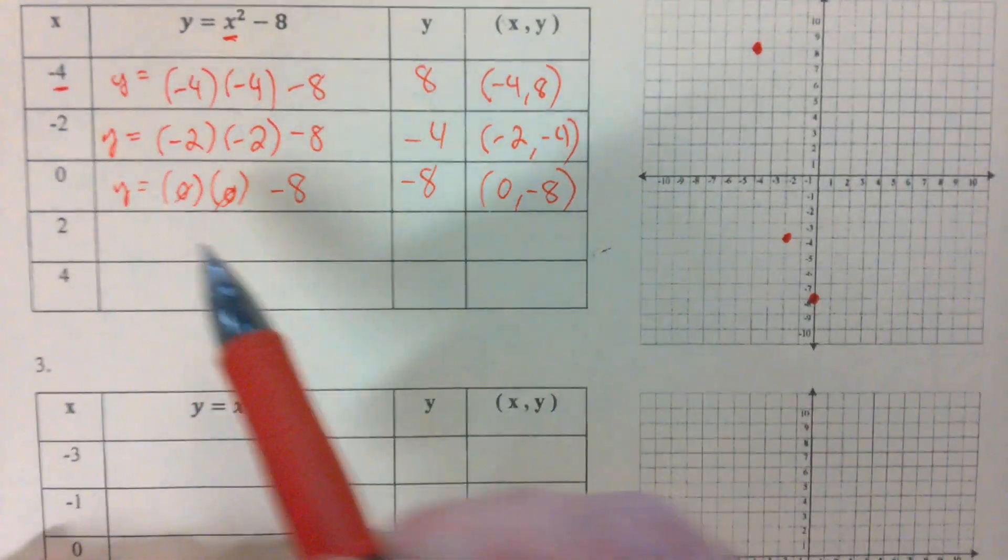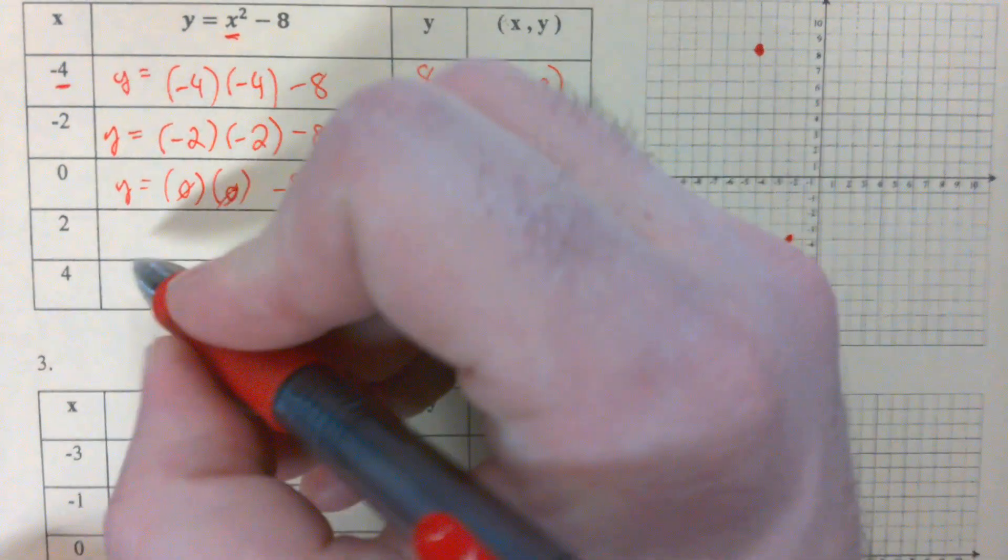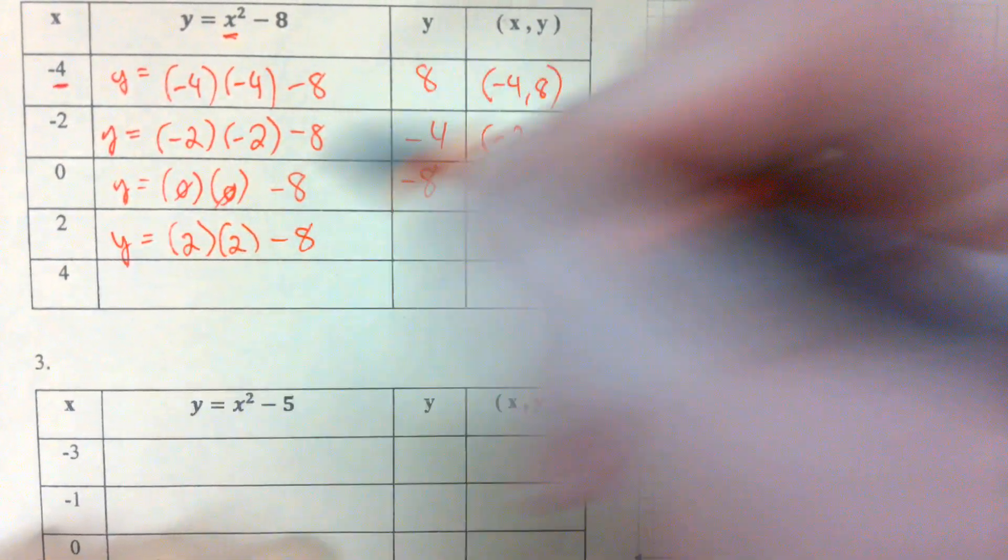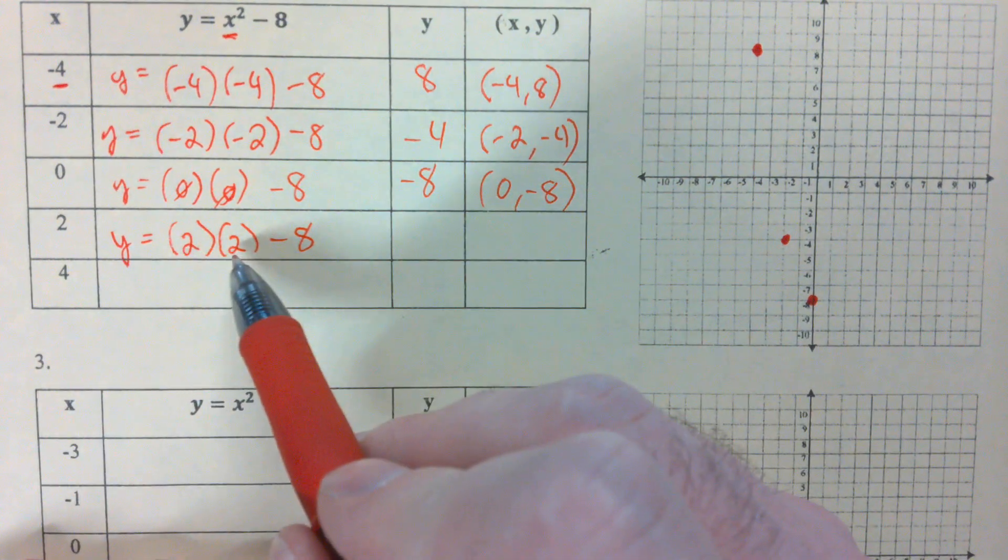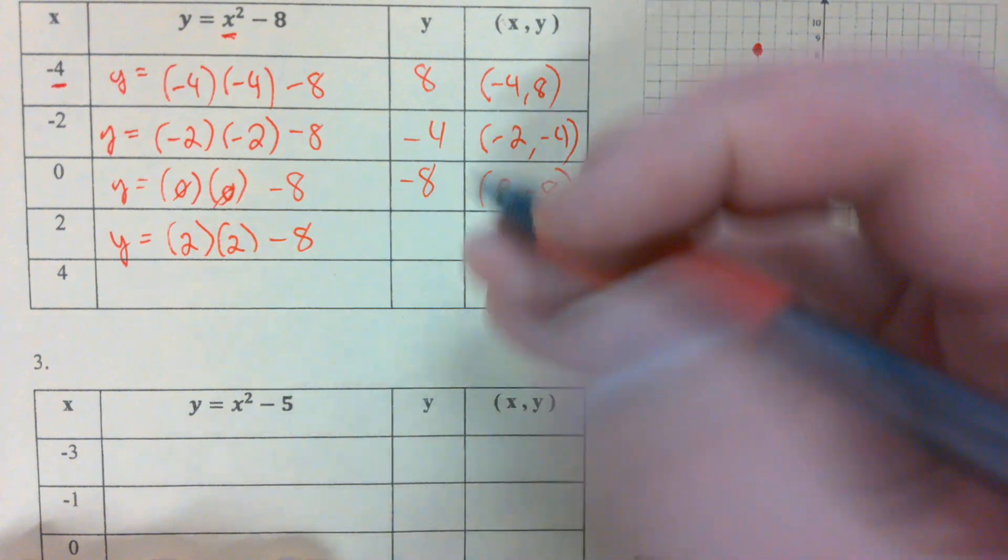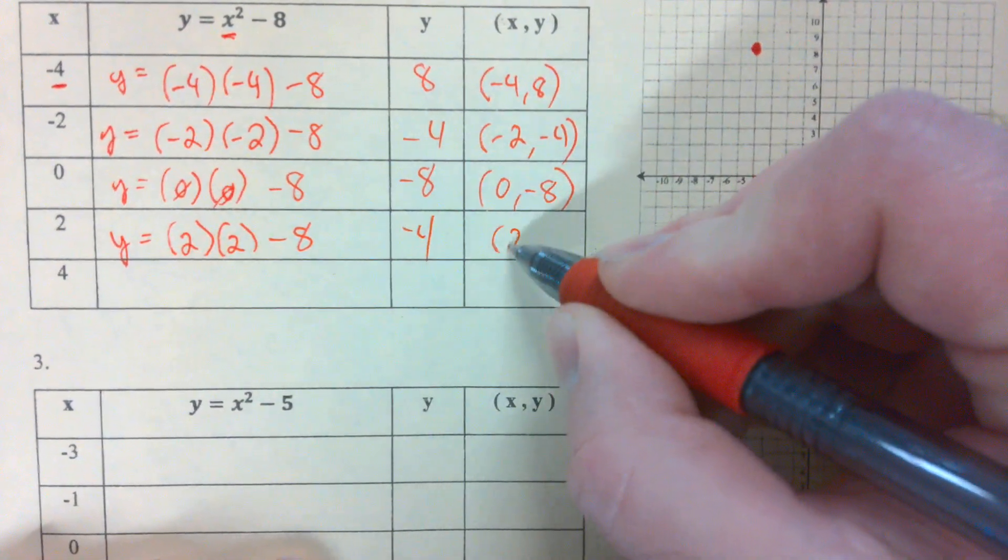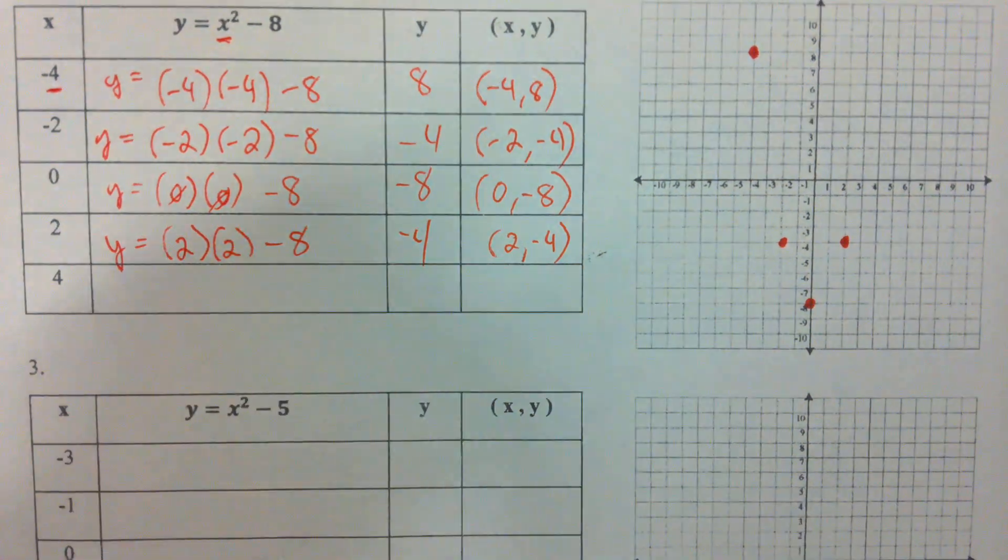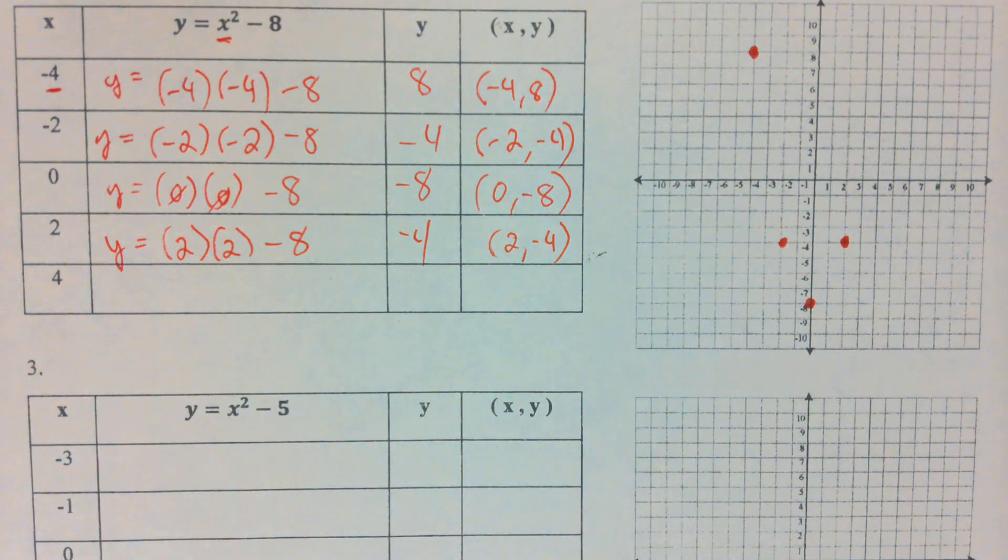That's right, with some negatives there in the middle. If we plug in positive 2, we're going to see that kind of mirrored effect again with my outputs. 2 times 2 is 4. 4 minus 8 gives me negative 4. So now we've got positive 2, negative 4. We can see our U-shape starting to form.